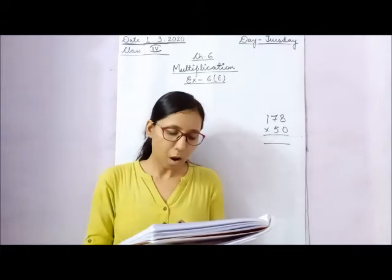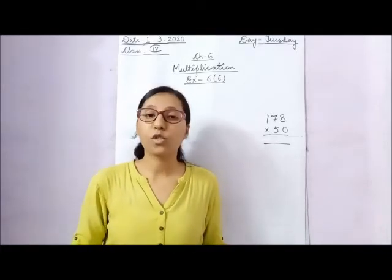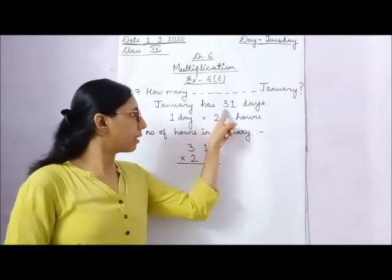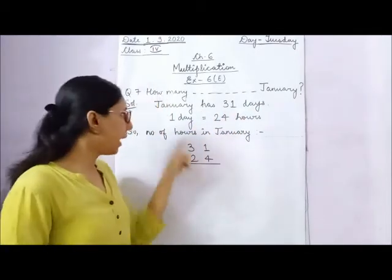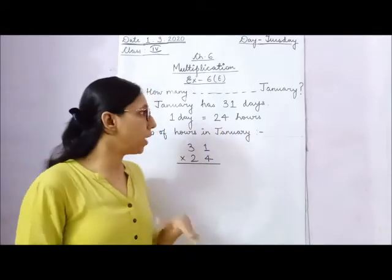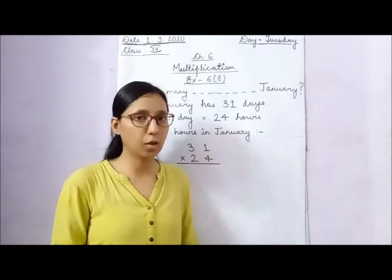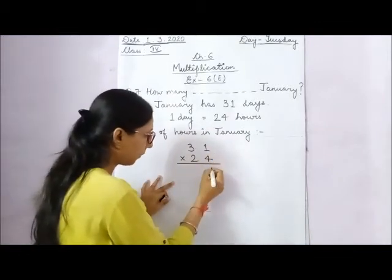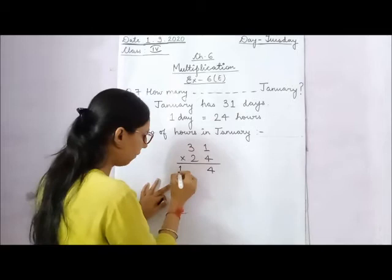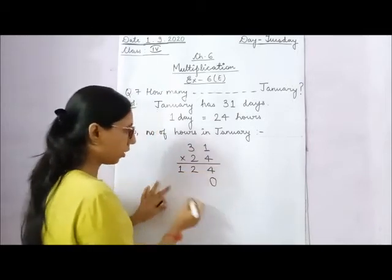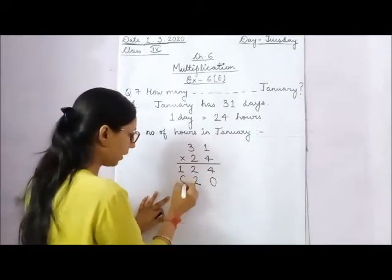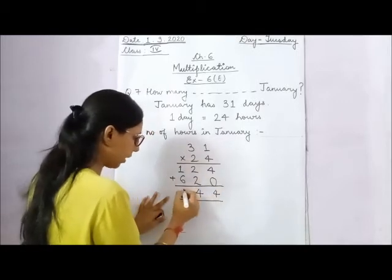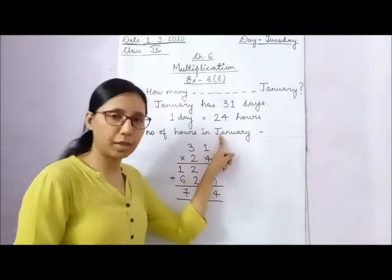Question 7: How many hours are there in the month of January? Remember, January has 31 days and a day has 24 hours. So we multiply 31 by 24. 4 into 1 is 4, 4 into 3 is 12. Then 2 into 1 is 2, 2 into 3 is 6. Adding: 4, 2 plus 2 is 4, 6 plus 1 is 7. So there are 744 hours in January.